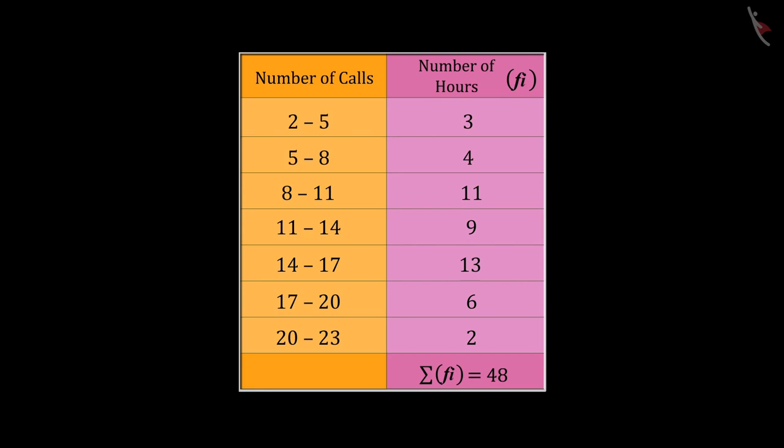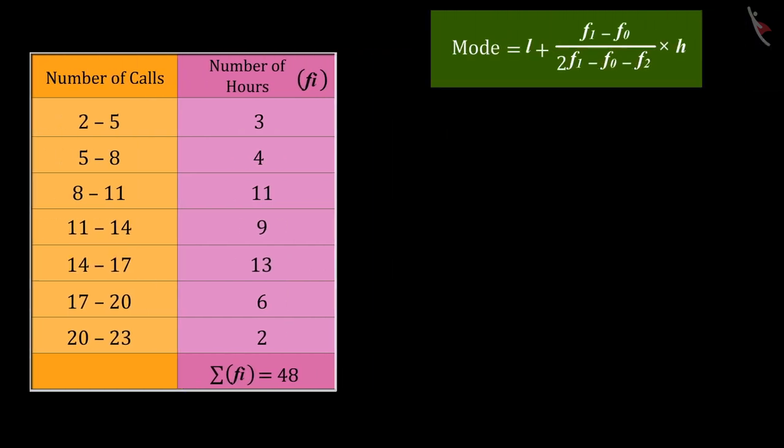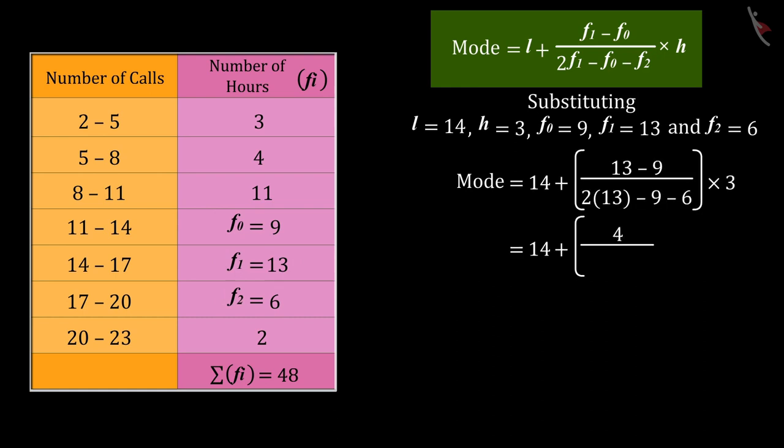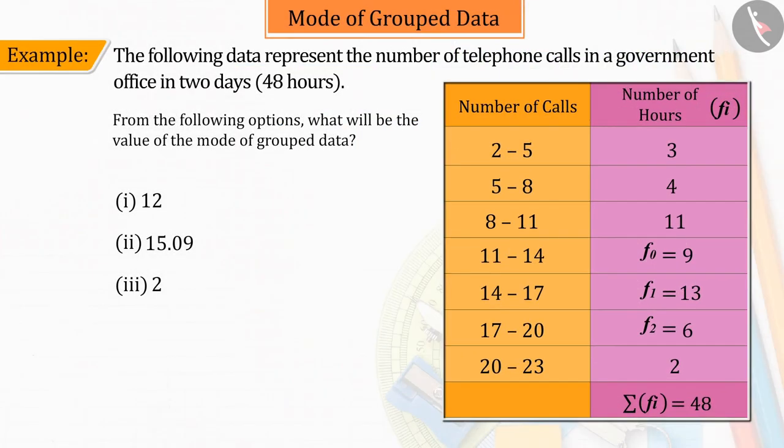Since we have to find the value of the mode, therefore, with the help of the given data, substituting the values of L, H, F0, F1, and F2 in the modal formula and on solving it, the value of mode obtained is approximately 15.09. So, option 2 is the correct answer.